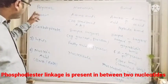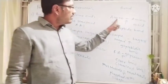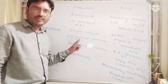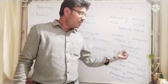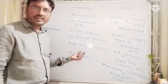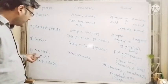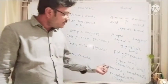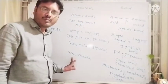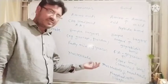So let us recall: Proteins are made up of amino acids — 20 standard amino acids — and between two amino acids the peptide bond is present. Carbohydrates are made up of simple sugars and the bond between two sugar molecules is the glycosidic bond. Lipids are made up of fatty acids and glycerol, with an ester bond between them. Nucleic acids are made up of nucleotides, joined by phosphodiester linkage.